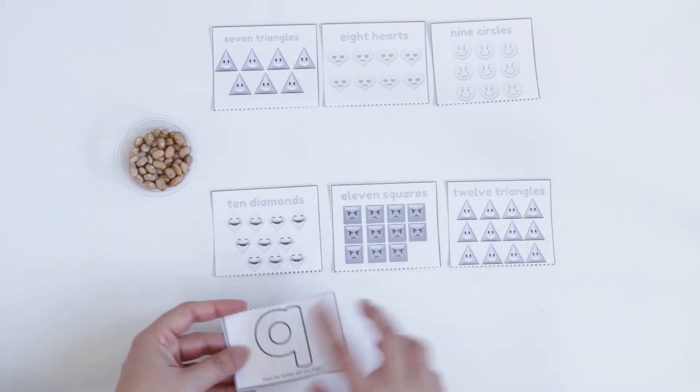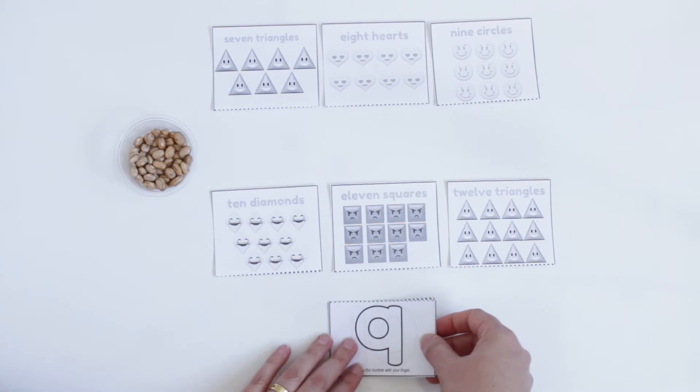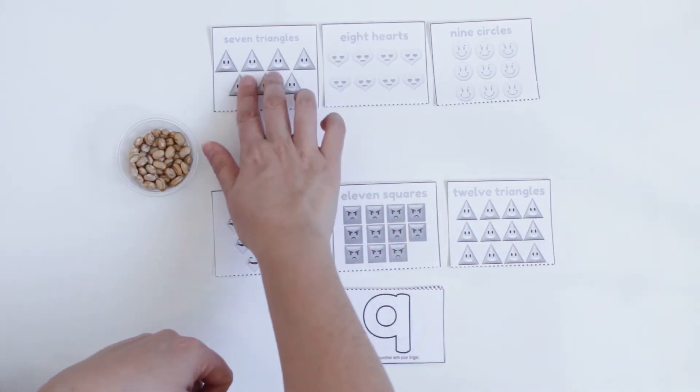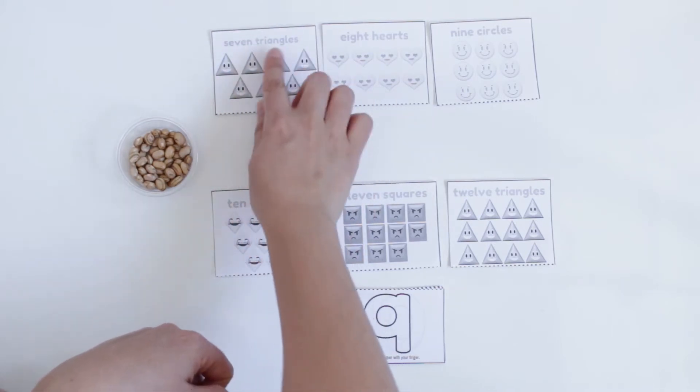But if it's still too hard, you can just leave them in order. To do this activity, the first thing you need to ask them to count. So, triangles.